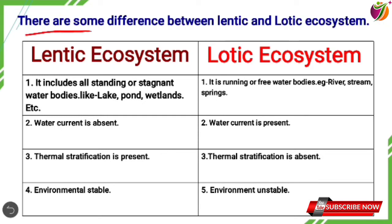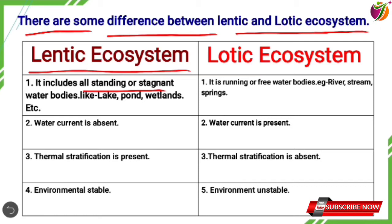There are some differences between Lentic and Lotic Ecosystems. Lentic Ecosystem includes all standing or stagnant water bodies like lake, pond, wetlands, etc. Water current is absent in Lentic Ecosystem.